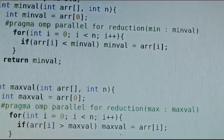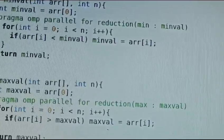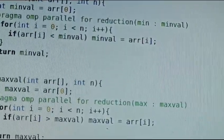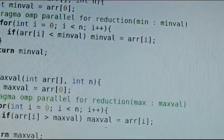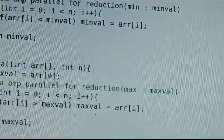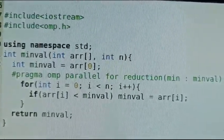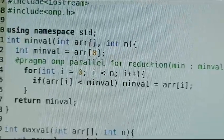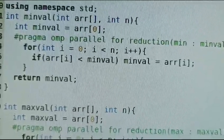Then hash pragma omp parallel for reduction(min : minval) is an OpenMP directive that specifies the following for loop should be executed in parallel using multiple threads. The reduction min colon minval clause indicates that each thread should maintain a private copy of minval and update it with the minimum value it finds in its portion of the loop.